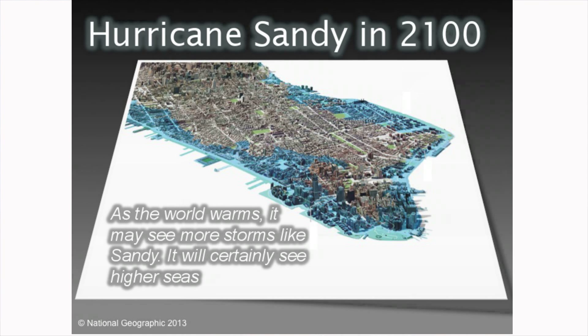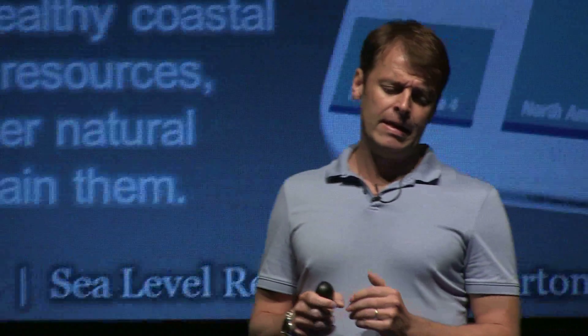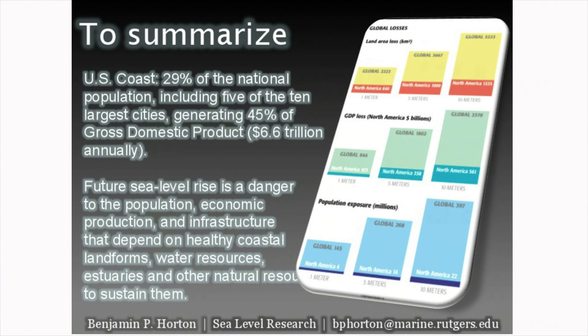This slide shows the effects of Hurricane Sandy in 2100 with the intermediate high scenario, which is approximately four feet. To summarize: the US Atlantic coast has 29% of the US population, five of the ten largest cities, and generates 45% of this country's gross domestic product — a mere $6.6 trillion per year. Future sea level is a danger to these populations, their economic production and infrastructure, all of which rely on a healthy coastline.